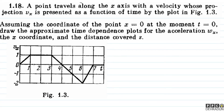Chaliye, toh phir try karte hain is sawaal ko. Dekho bachyo, sawaal mein basically yeh kehna chahta hai ki yeh jo point hai, wo travel kar raha hai sirf x-axis ke along. Aur aapko velocity dv hai na, vx diya hua hai. Aur saath hi saath aap yeh deekh sakte hain ki kabhi iski velocity positive hai aur kabhi velocity negative bhi ho jaati hai. In fact, kuch moments par to iski velocity 0 bhi hai. Ab aapko yeh kaha gaya hai ki jab yeh x equal to 0 par tha, us moment ko t equal to 0 assign karein, aur humein batana hai acceleration ka, position ka, aur distance ka graph.